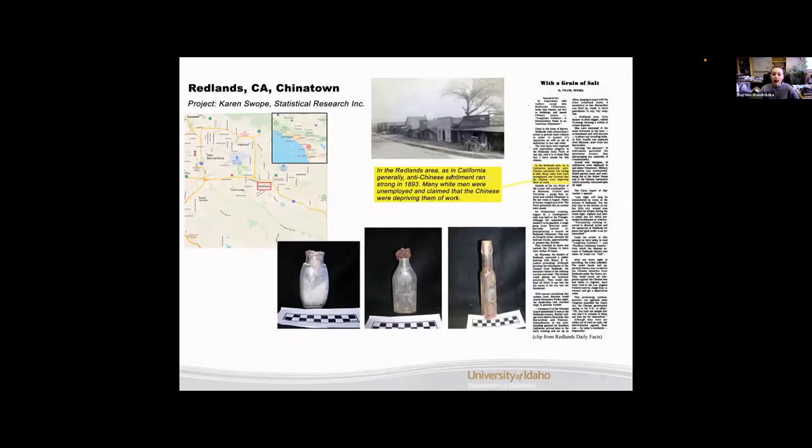Our next site is the last one from California. This is our Redlands California Chinatown. This project was headed up by Karen Swope. You can see here on the current map of California, this red box indicates where the Redlands Chinatown is. And here is an excerpt from the Redlands Daily Facts that reads, in the Redlands area, as in California generally, anti-Chinese sentiment ran strongly in 1893. Many white men were unemployed and claimed that the Chinese were depriving them of work. So it really gives you a good idea of the community and the climate of this area at the time. Another historical picture of the site and our three artifacts that we're going to be taking a look at.